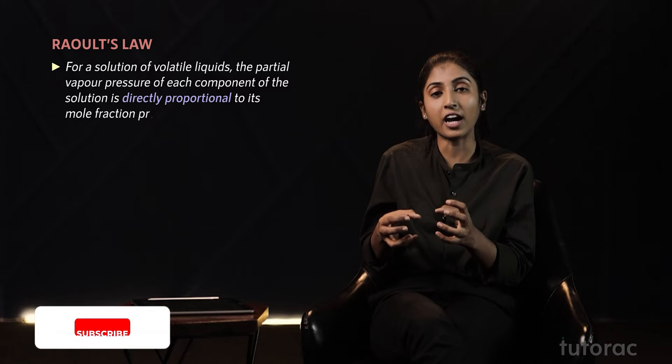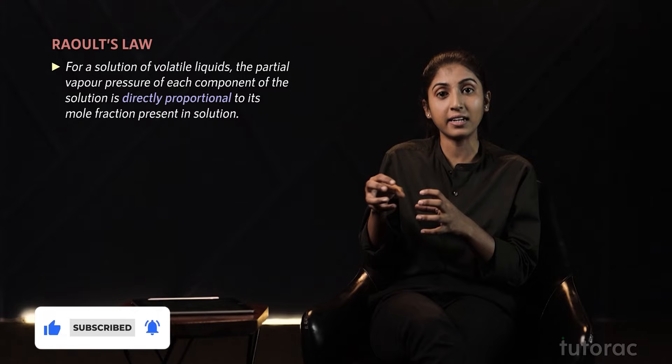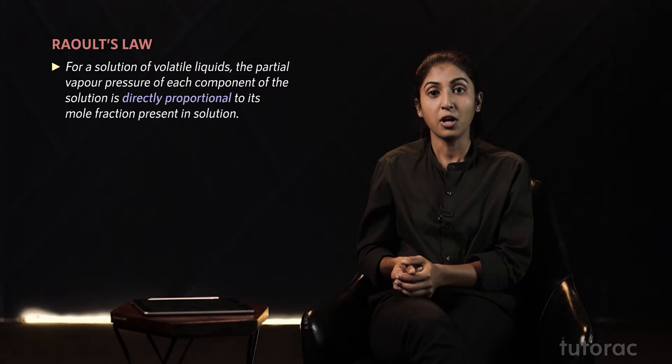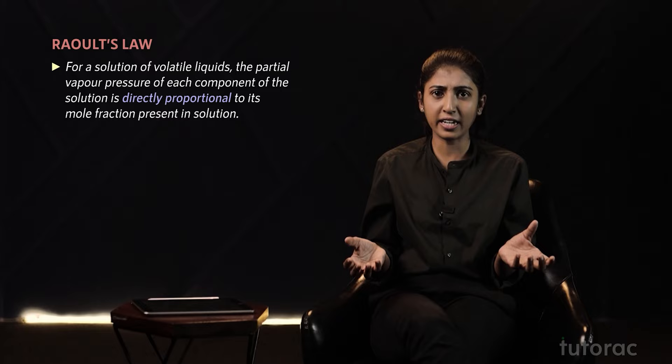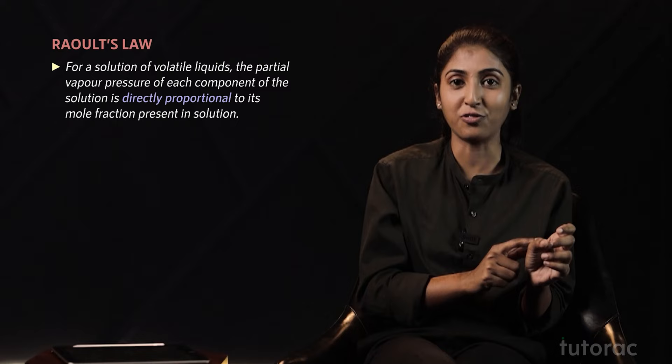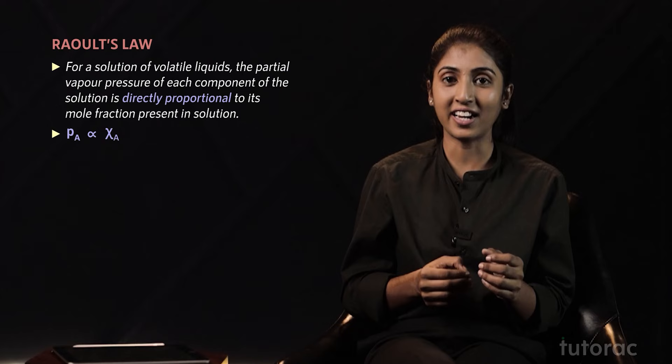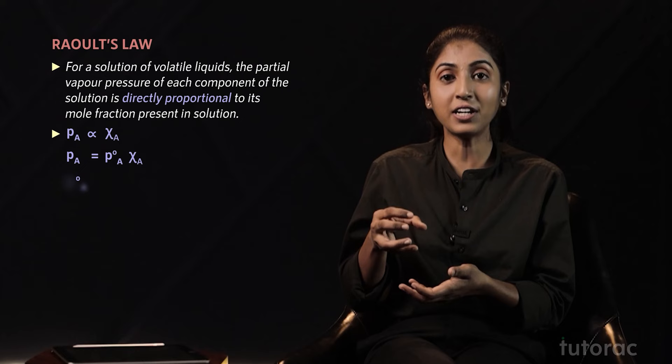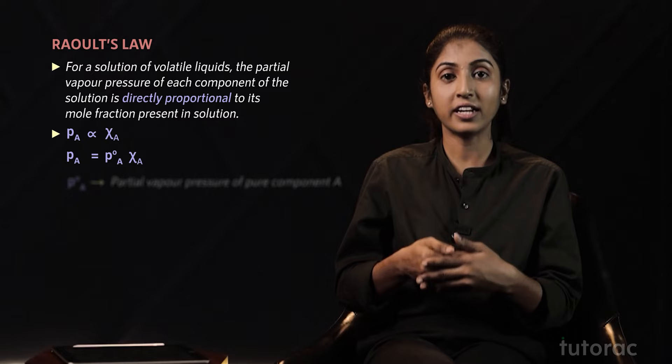Raoult's Law gives a quantitative expression connecting vapor pressure with the mole fraction of a component. He stated that the partial vapor pressure exerted by a liquid is directly proportional to the mole fraction of that liquid. So if a liquid contains two volatile components A and B, then P_A is directly proportional to χ_A, which we write as P_A = P°_A × χ_A, where P°_A is the vapor pressure of the pure component A.